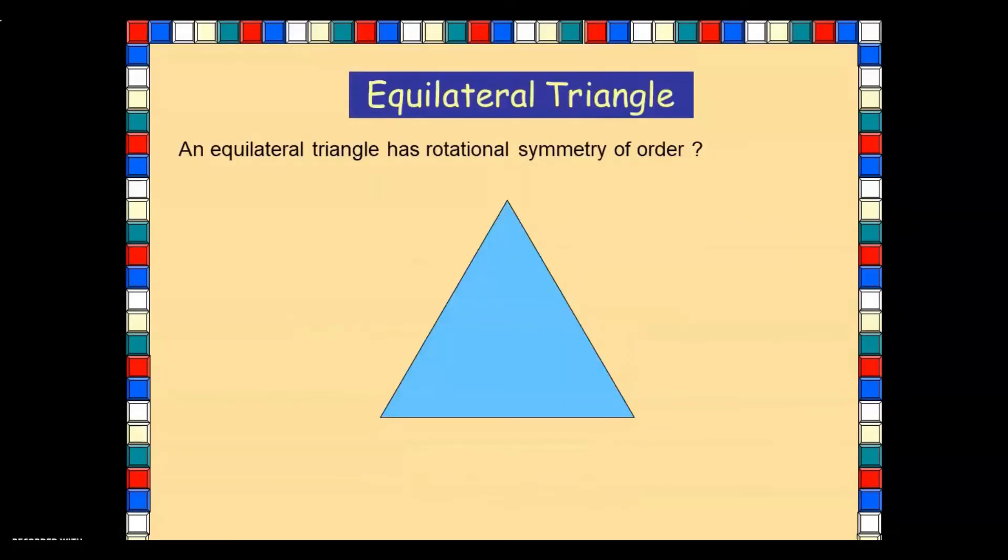Now let's look at some of the regular shapes. An equilateral triangle. Let's rotate this: 1, 2, and 3. So it has rotational symmetry of order 3.